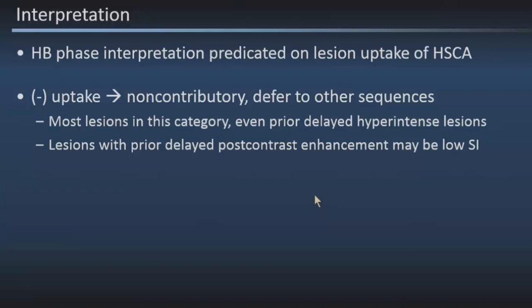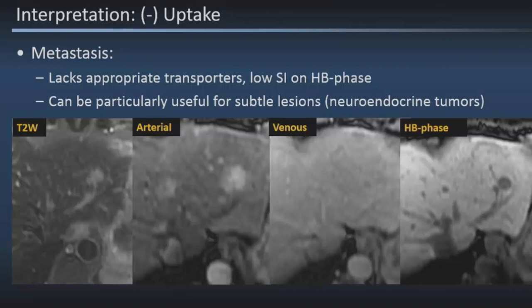Let's look at one case. This is a metastasis from a neuroendocrine tumor. Metastasis is one of the areas where EOVIS is highly touted because it can clearly show the presence of a lesion — it will be low signal intensity on the hepatobiliary phase since there are no transport proteins for the gadolinium chelate. Here we see a small lesion in the left hepatic lobe with conspicuous arterial enhancement, very hard to see on the venous phase, but on the hepatobiliary phase it's nicely outlined as a round mass, confirming the neuroendocrine tumor.